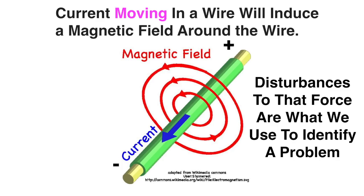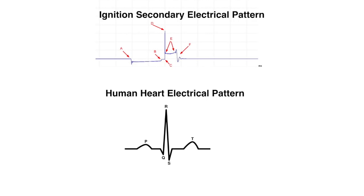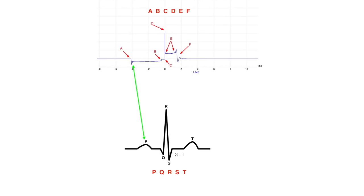If you look at both of these, the top is alphabetically starting with A and the bottom — the human heart — is alphabetical starting with P. It basically just means it progresses in a normal fashion. The waveform at the top, which is secondary, the A — the first thing — corresponds to P in the human heart. Both are the first things that occur, and then so on until they're all covered.